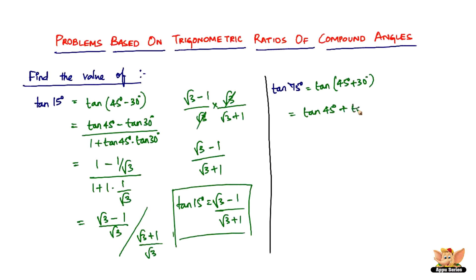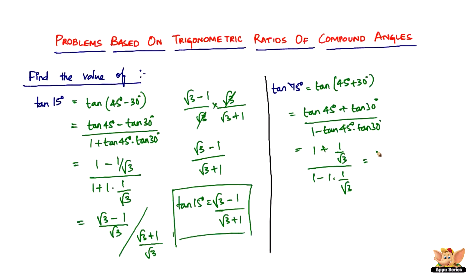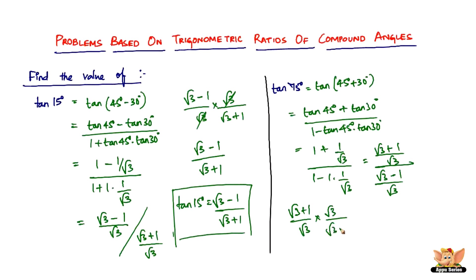Tan(a plus b) is tan a plus tan b divided by 1 minus tan a times tan b. So that's tan 45 plus tan 30 degrees, divided by 1 minus tan 45 into tan 30 degrees. Tan 45 is 1, tan 30 is 1 by root 3, giving us root 3 plus 1 divided by root 3, over root 3 minus 1 divided by root 3. This becomes root 3 plus 1 by root 3, times the reciprocal which is root 3 by root 3 minus 1. Root 3 cancels, giving us root 3 plus 1 divided by root 3 minus 1.